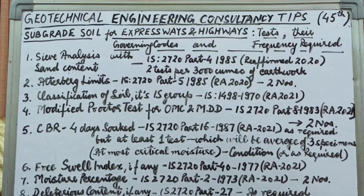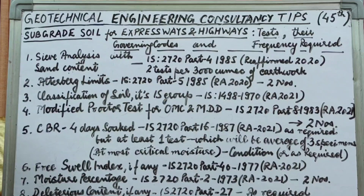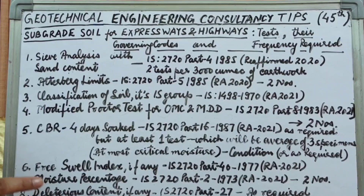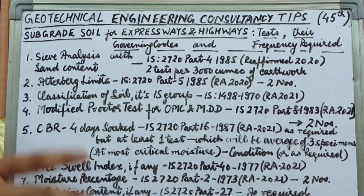Clause 903.2.1 of MoRTH — Ministry of Road Transport and Highways specifications — Chapter 900 states that for borrowed material, earthwork for embankment and subgrade, and cut formation, these are the bare minimum tests which need to be performed for the soil sample that is to be used for earthwork and preparation of the subgrade.